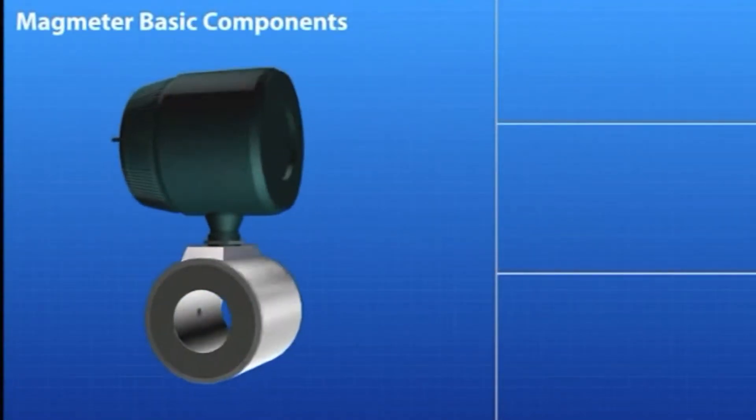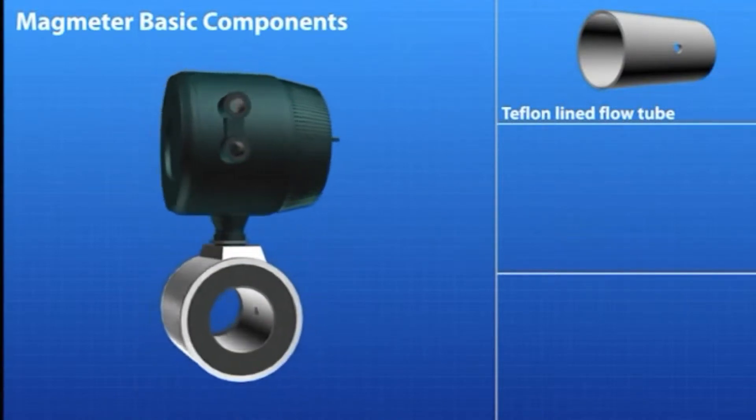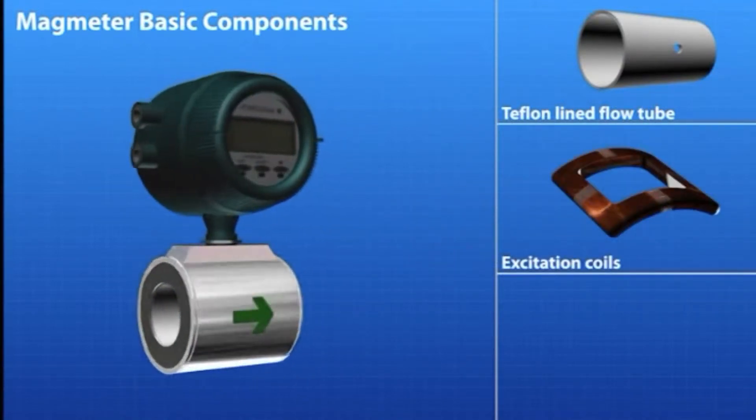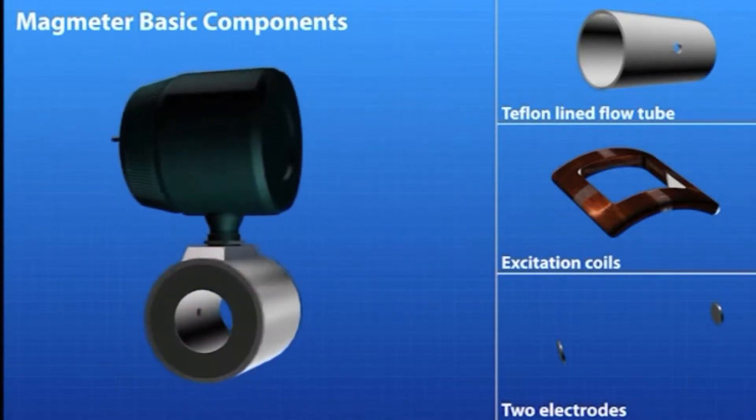The basic components of the magnetic flow meter body are a lined flow tube, typically Teflon, excitation coils, and two electrodes mounted opposite of each other within the flow tube.